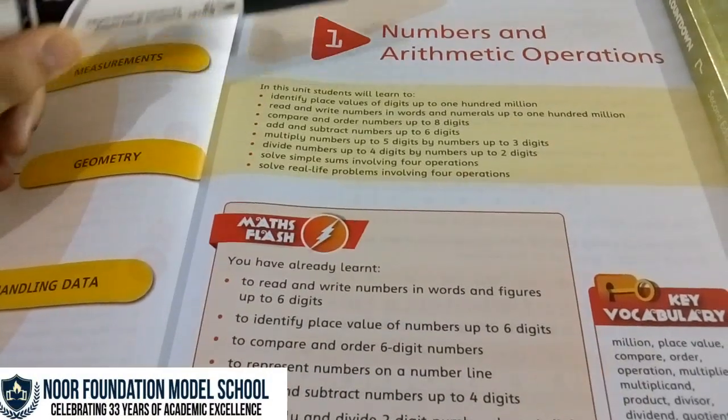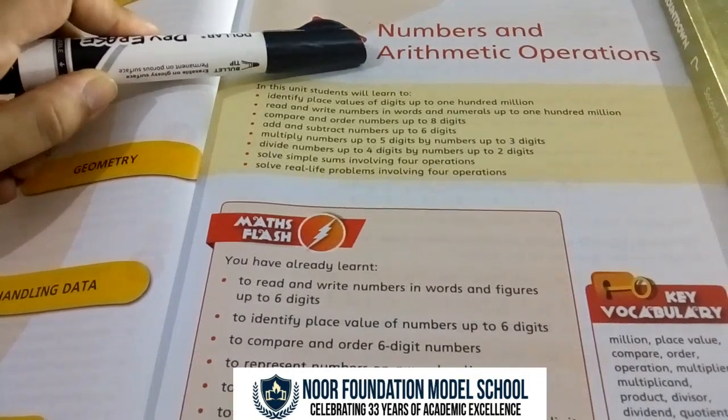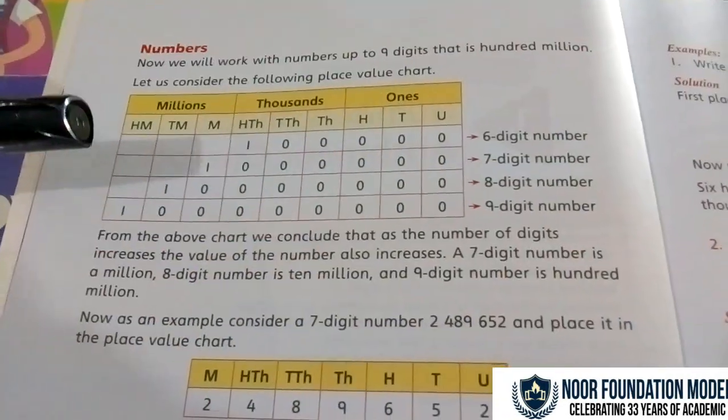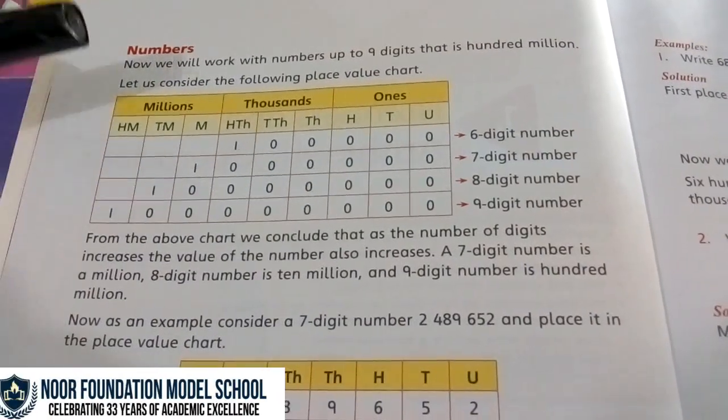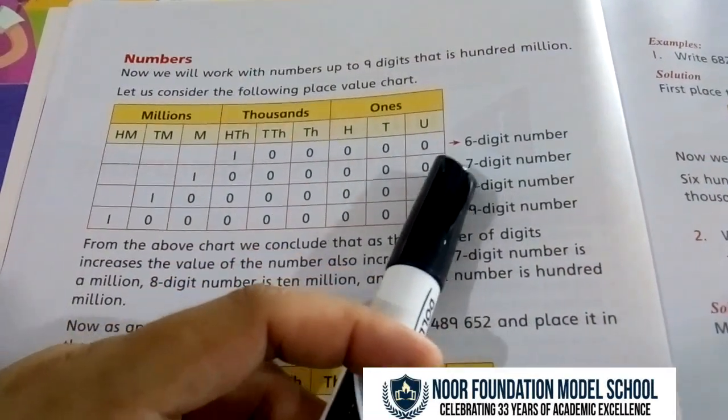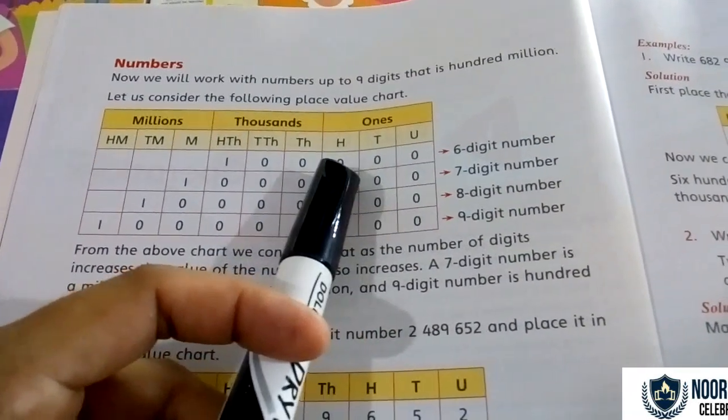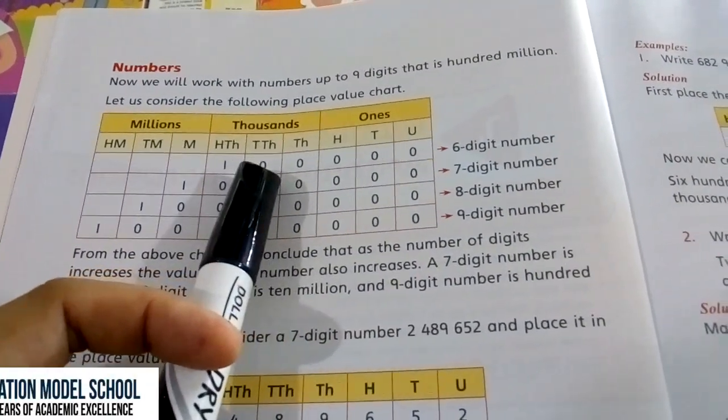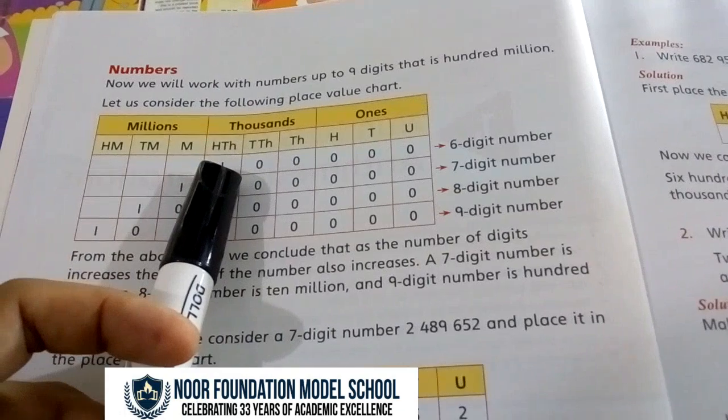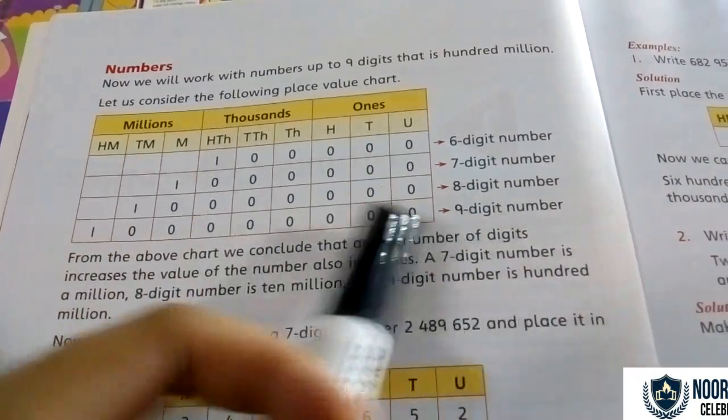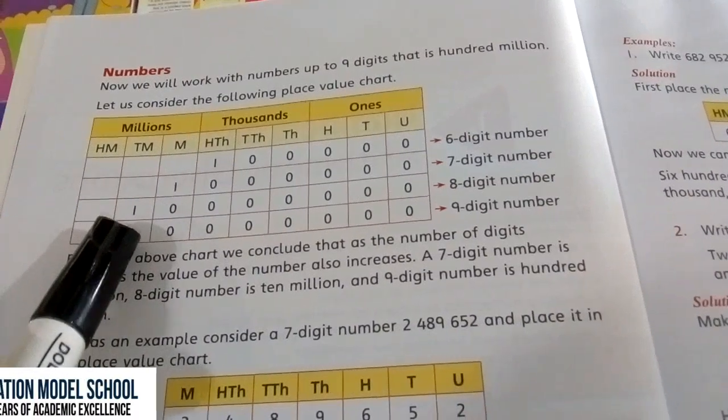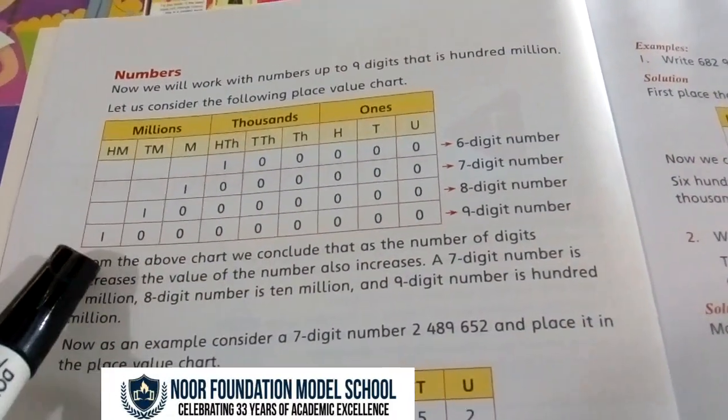The first chapter is Numbers and Arithmetic Operations. Children, you have to learn this place value chart by heart. For 6-digit numbers: unit, ten, hundred, thousand, ten thousand, hundred thousand. For 7-digit numbers: million. For 8-digit numbers: ten million. And for 9-digit numbers: hundred million.